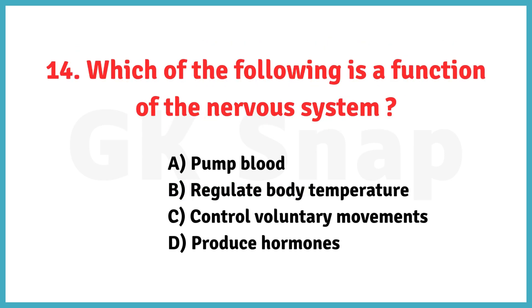Which of the following is a function of the nervous system? Correct answer is option C: control voluntary movements.